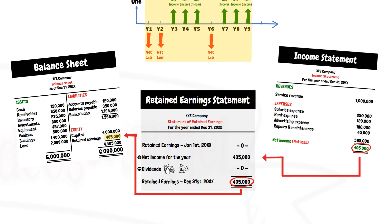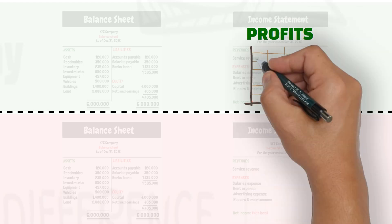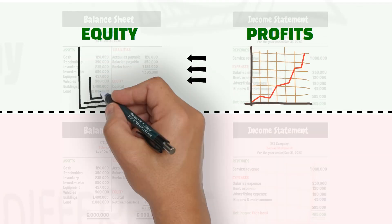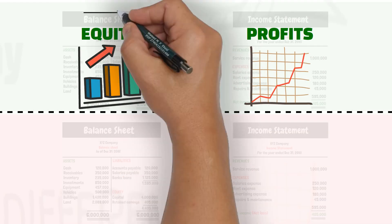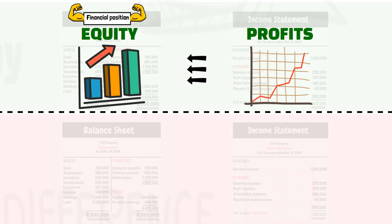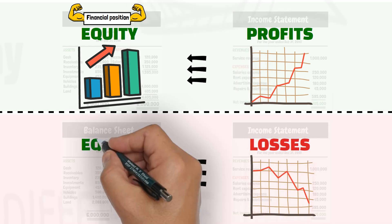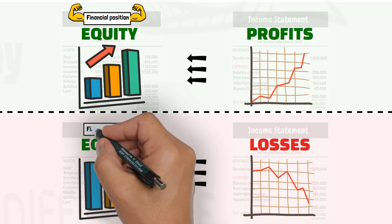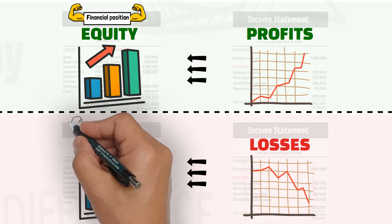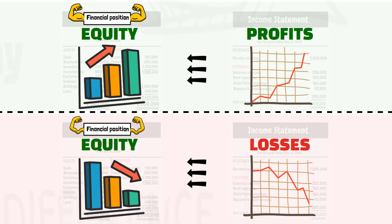This link between the income statement and the balance sheet highlights an important fact: profitable business operations increase the equity and therefore strengthen the financial position of the business. Losses suffered by the business decrease the equity and therefore weaken the financial position of the business.